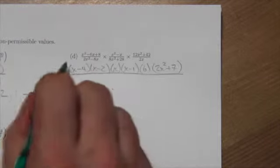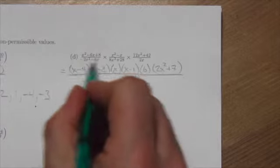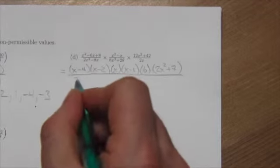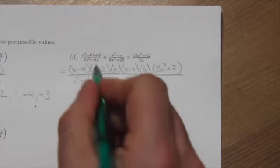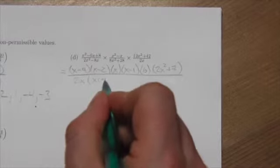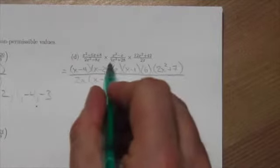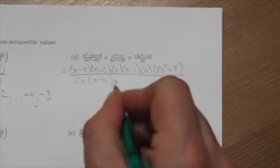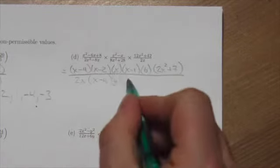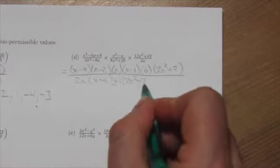Now we do the same thing in the denominator. In the first factor, there's a common factor of 2x, so we pull that out and that leaves us with 2x(x - 4). In the next one, there's a common factor of 4, and that leaves us with 4(2x² + 7).